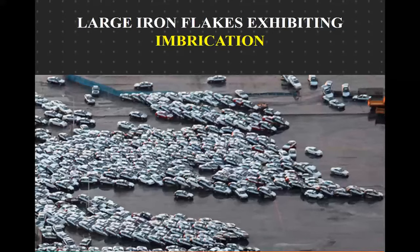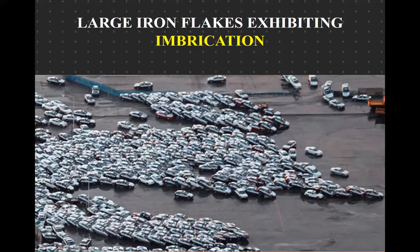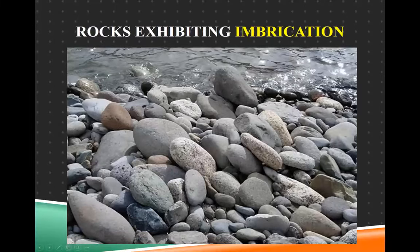Here is an example of large iron flakes — i.e., cars — exhibiting imbrication. This didn't happen from a simple river water flow; it happened after a tsunami hit. This was over in Japan at a large car dealership lot. You can tell the water was coming from the right of the photo, moving to the left, because of the way the cars are stacked up on each other. Here you can see natural imbrication — rocks, no cars involved — and you can tell that the flow is from the right to the left again.